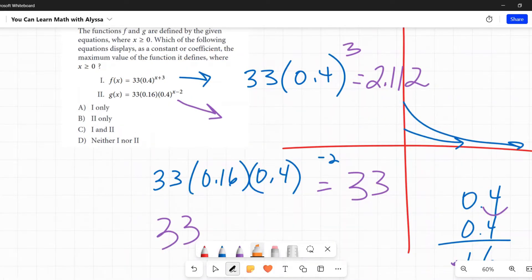On to the second one: g(x). When I found the maximum of that one, when x is greater than or equal to 0, I got 33. Looking at that function, is 33 anywhere in there? Sure thing, there it is: 33. So it is not true for one, it is true for number two. So the answer is B, two only.